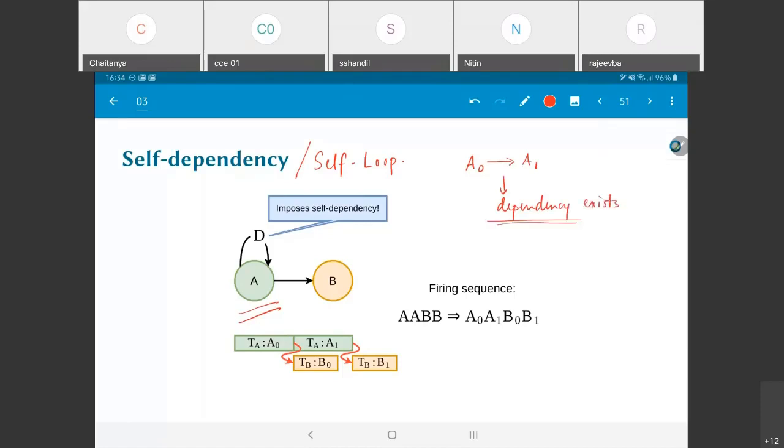Previously, when I just had A standing alone by itself with no incoming edges, it meant that A0, A1, A2, yes, there are a sequence of operations that need to happen, but it need not happen one after the other. They could also happen all in parallel. Over here, on the other hand, because I have this self-loop, it means that only after A0 can I do A1.